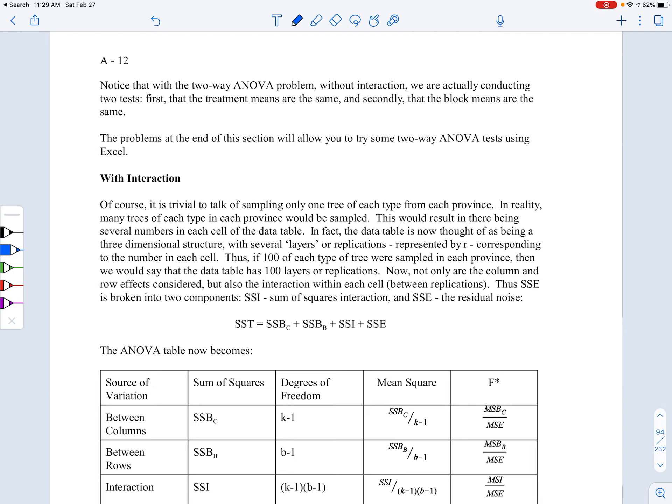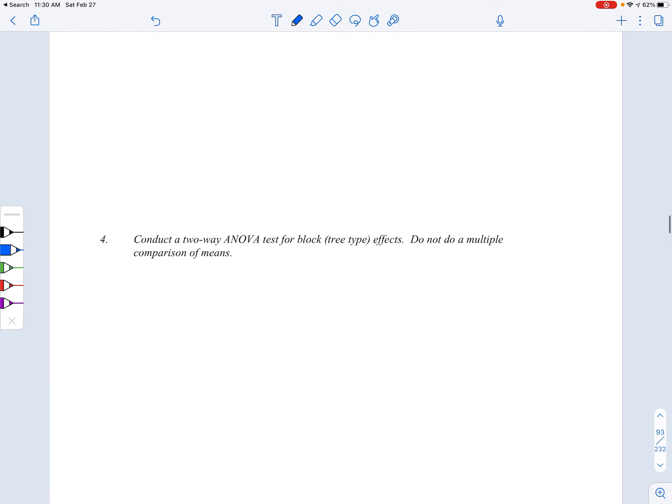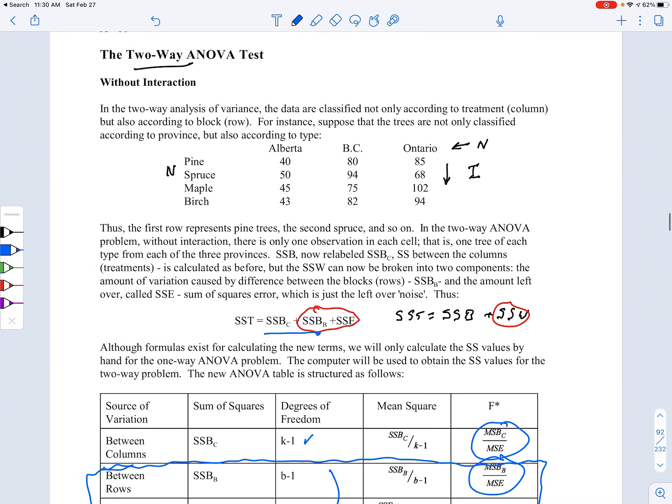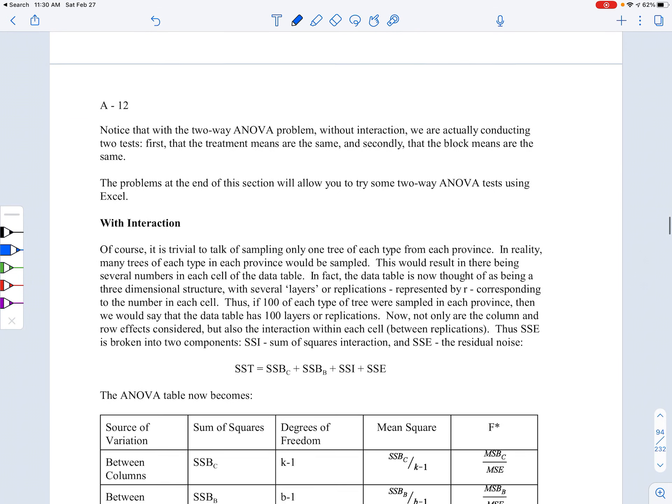Again, it's kind of goofy to talk about in this particular example taking one pine tree from Alberta and using it to represent all the pine trees from Alberta - that doesn't make sense. So what we can do then is you can almost think of this as being like a three-dimensional thing, so you have not just columns and rows but you also have some depth to it. Or another way to think of it is stuffed in that one cell here where we've got the pine trees, let's say you've got 50 pine trees, so there's actually 50 different numbers there.